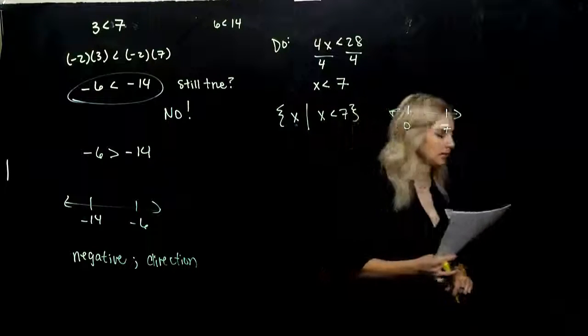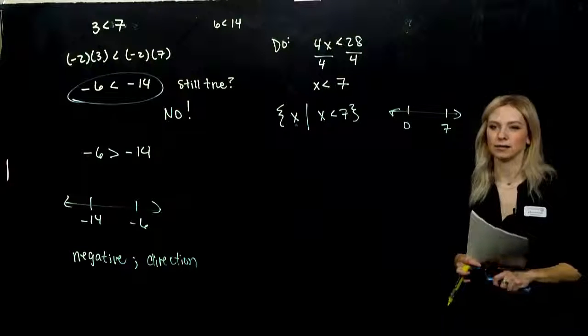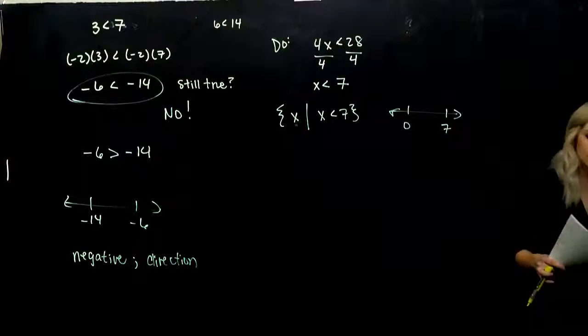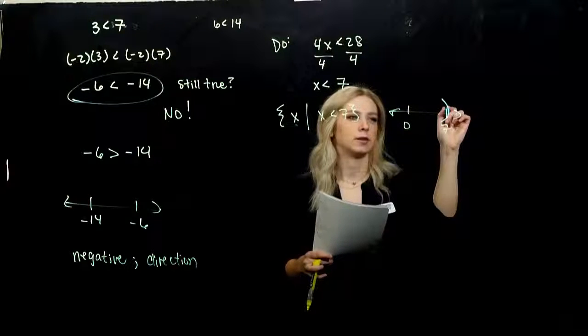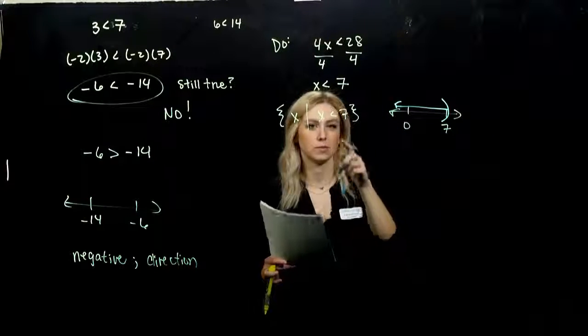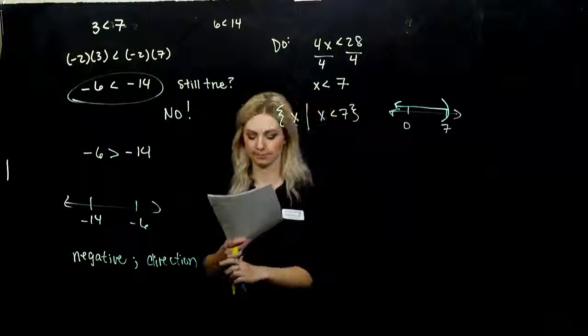I want an open or a closed bracket on 7. So I can't include it, so it needs to be open. In what direction do we need to be traveling? To the left, because we want anything less than that.